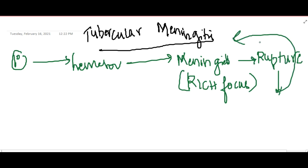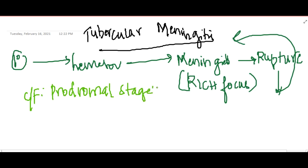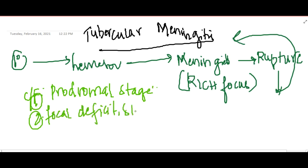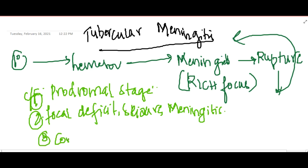In the clinical features of TBM, the first prodromal stage presents with fever, anorexia, nausea, and irritability. In the second stage, focal deficits are seen with seizures and meningeal signs like Brudzinski's and Kernig's signs. In the third stage, this progresses to coma and neurological sequelae.